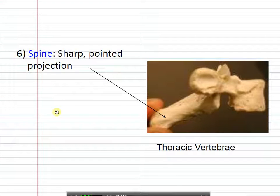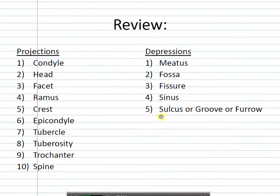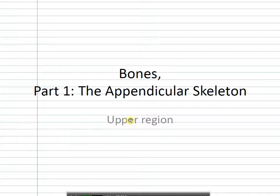Spines are very blatant projections — they usually have a point to them. Here's a spine on a scapula and here's a spine on a vertebra. Each of these are spinous processes — very bold projections. There's just a list of the different terms for projections and depressions, and these are used as locators, similar to how we use anatomical directional terms.